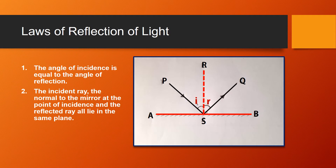The first law of reflection of light states that the angle of incidence is equal to the angle of reflection. In the picture, AB is the mirror and PS represents a ray of light incident on the mirror. The light is incident at point S, which is the point of incidence, and the reflected ray is reflected back at an angle R, which is equal to I.